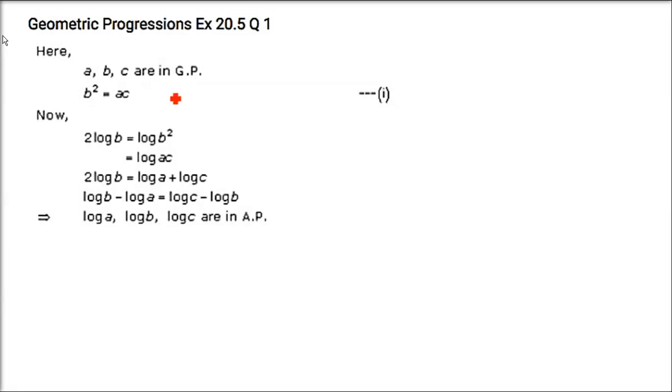If A, B, C are in GP, prove that log A, log B, log C are in AP.